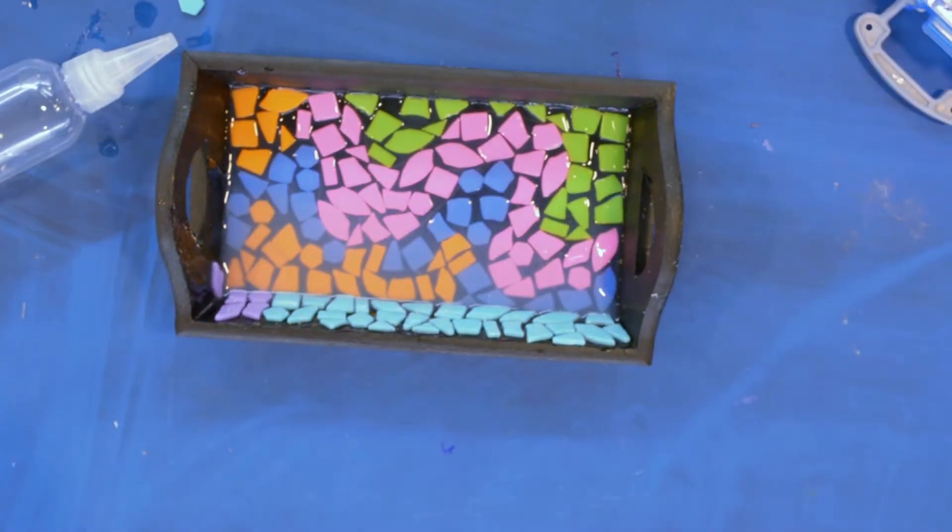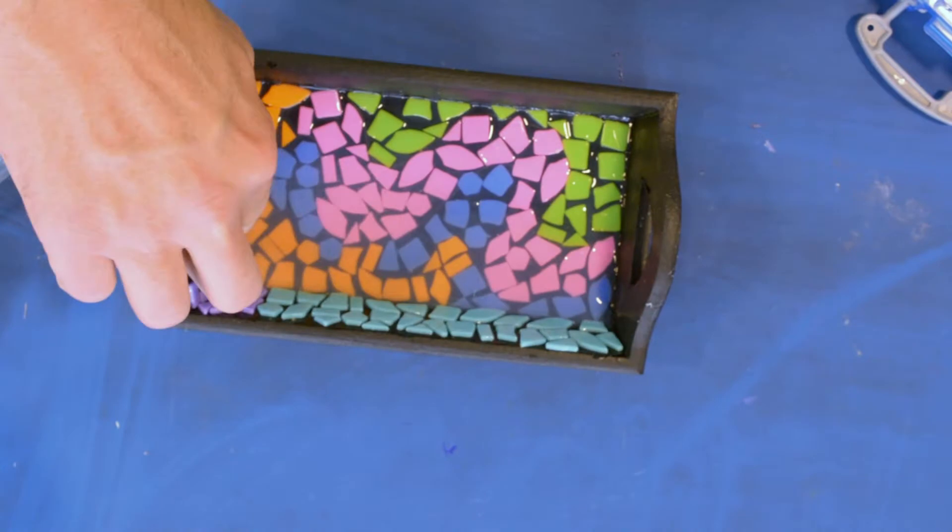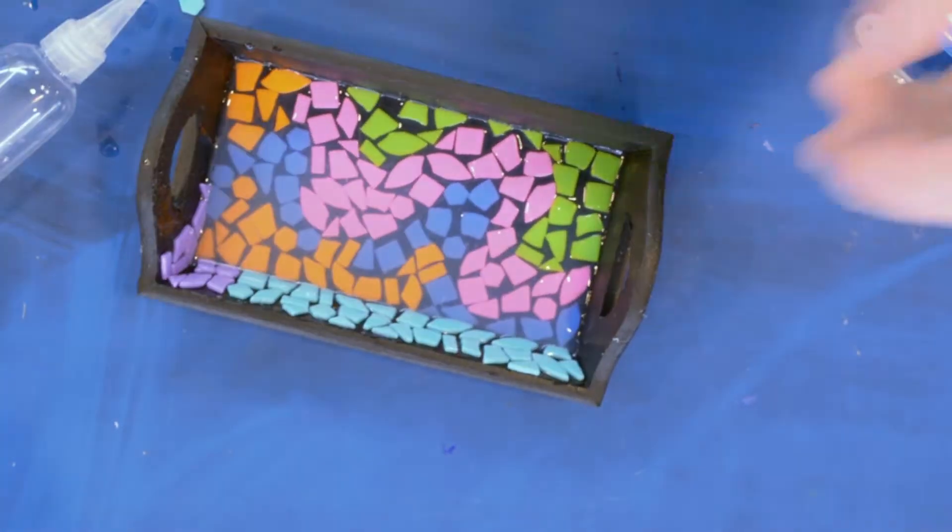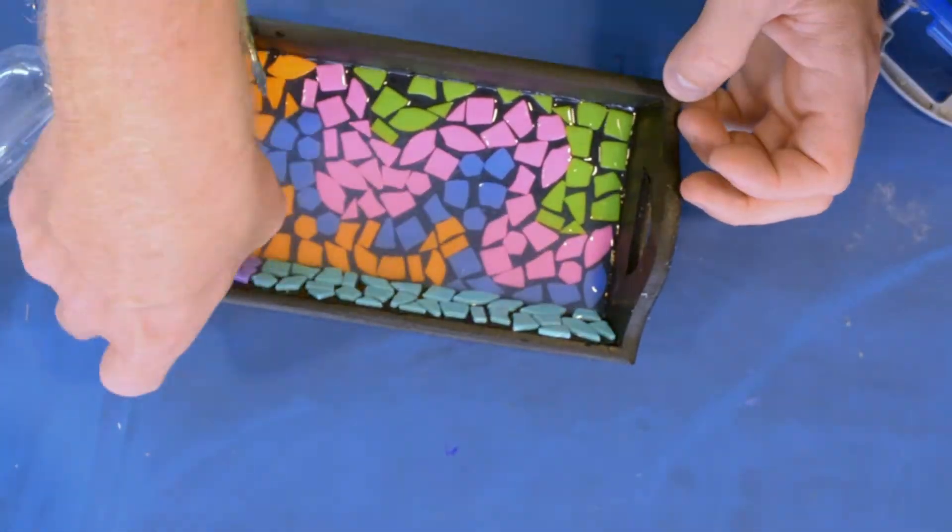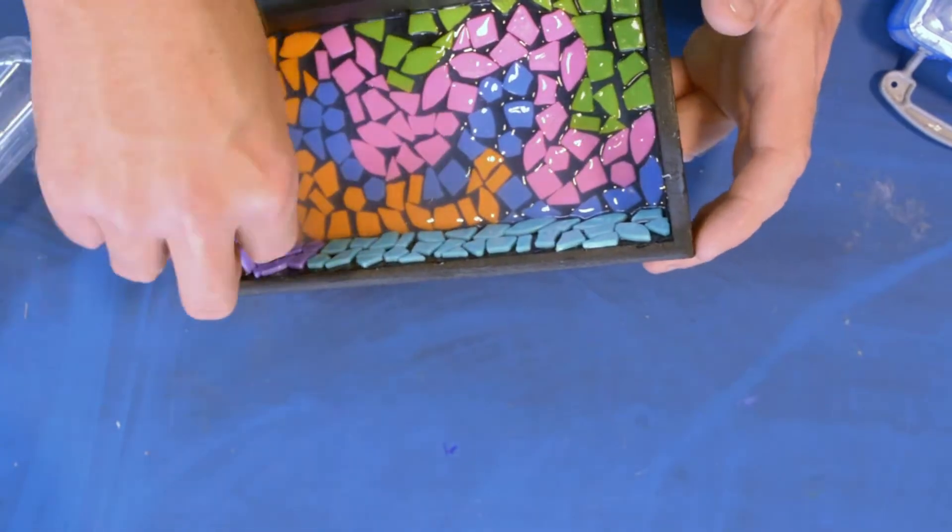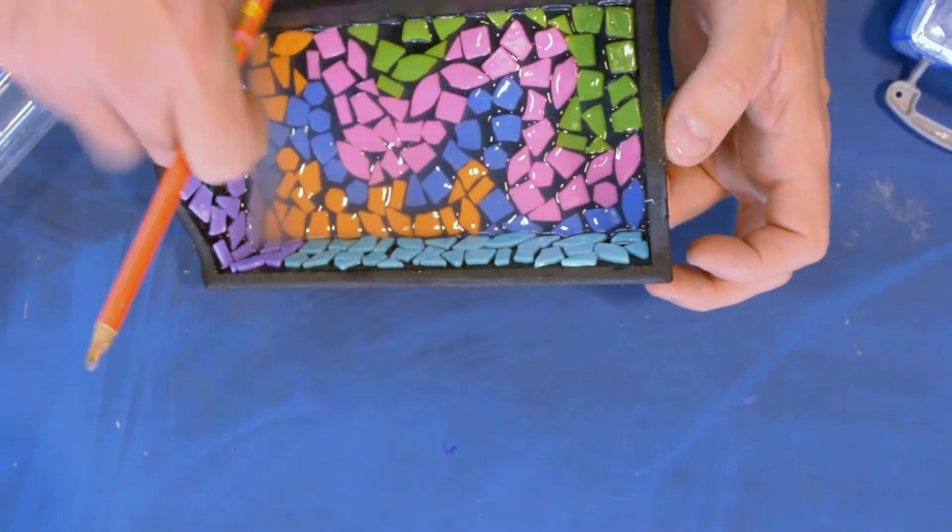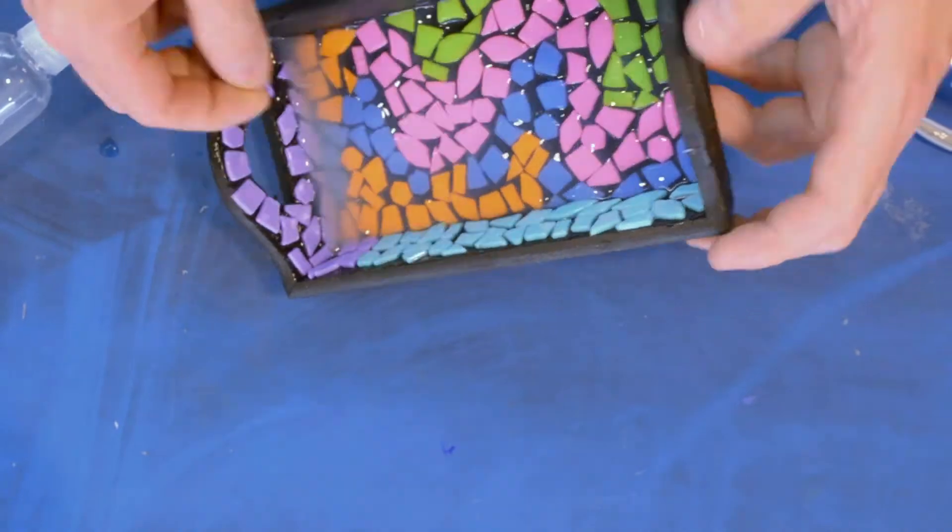When it's a little bit wet, you can still move your pieces, adjust them a little bit. When you're nearly done, now you might notice there's a couple of spots that don't look shiny. You can just put a little bit more of the pouring medium on it.